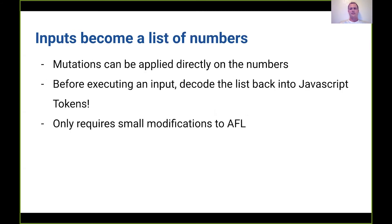Now that the inputs are a list of numbers, we can apply mutations directly on the numbers without worrying about what they are. Then before executing an input, we decode the list of numbers back into JavaScript tokens. This only requires very small modifications to a fuzzer like AFL.